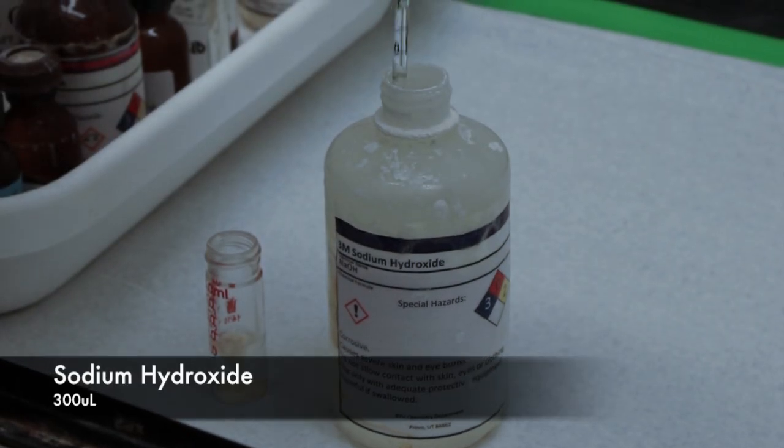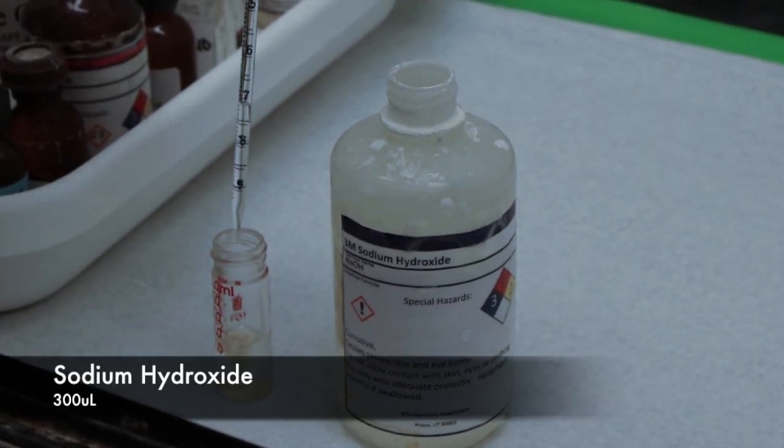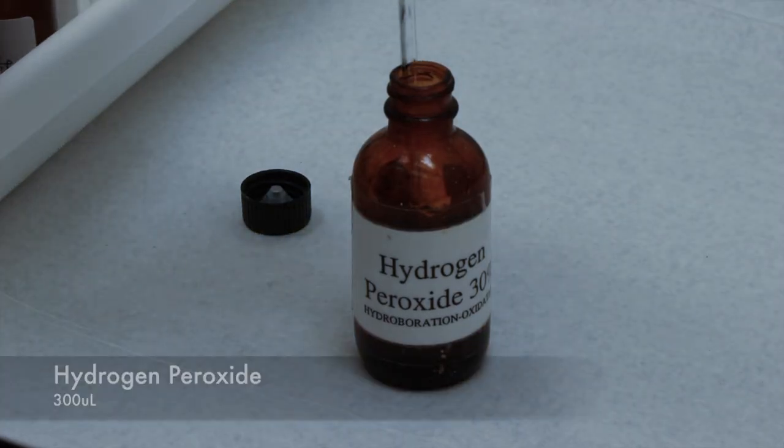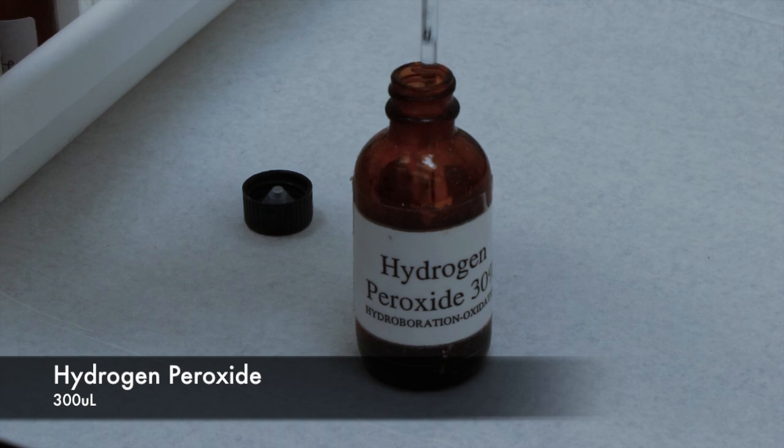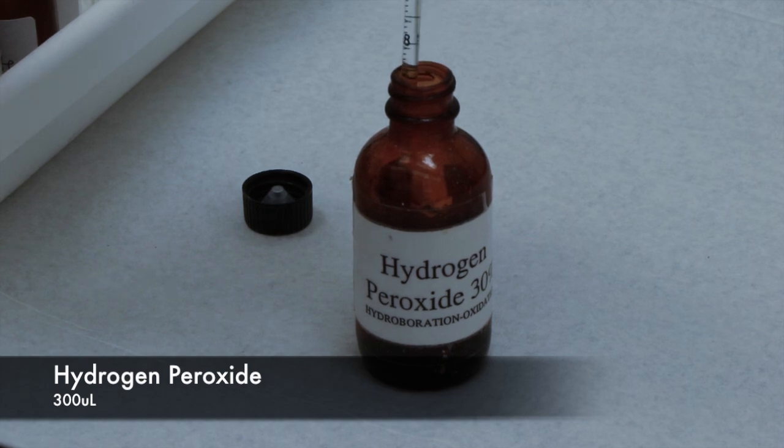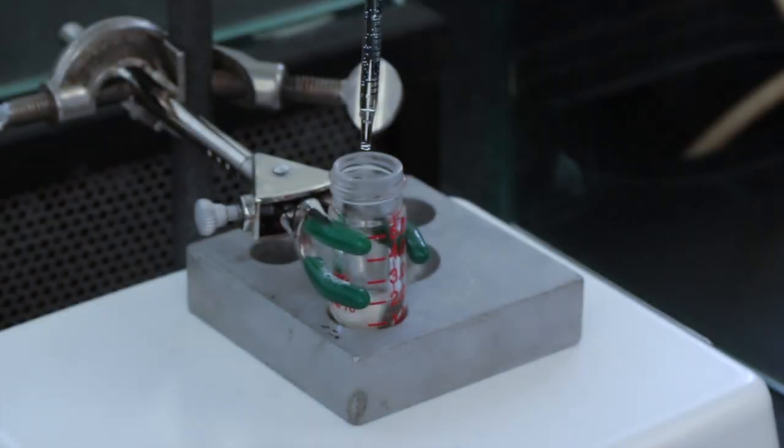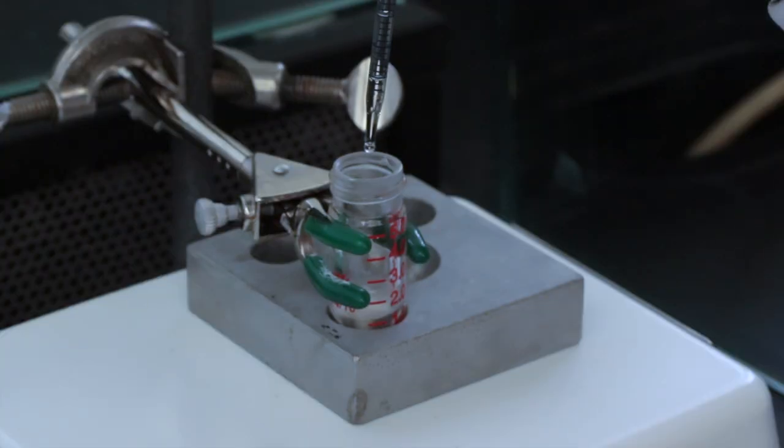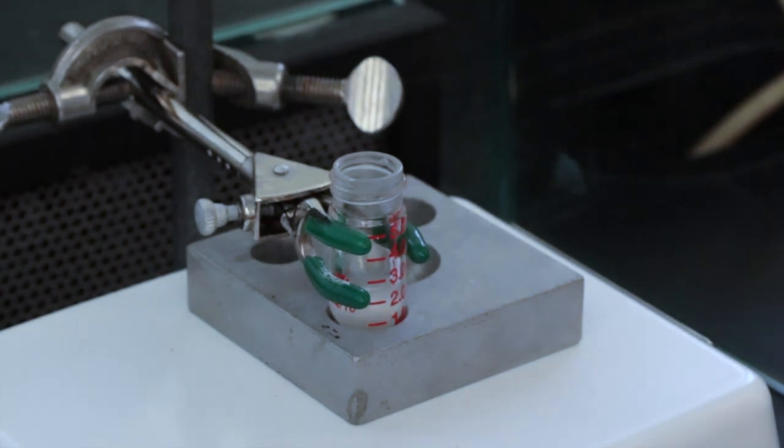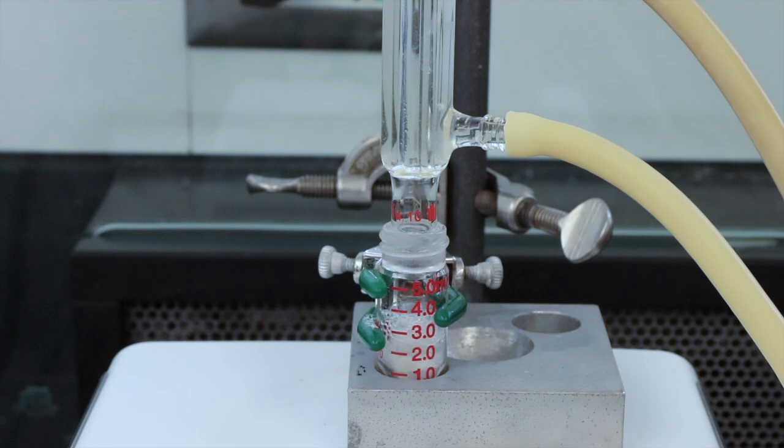Now we can move on to the oxidation step of this reaction. So I'll be adding the sodium hydroxide and the hydrogen peroxide. This is also very reactive so I'll be adding the hydrogen peroxide dropwise over a period of about 10 minutes. And we'll let that reflux for an hour now.